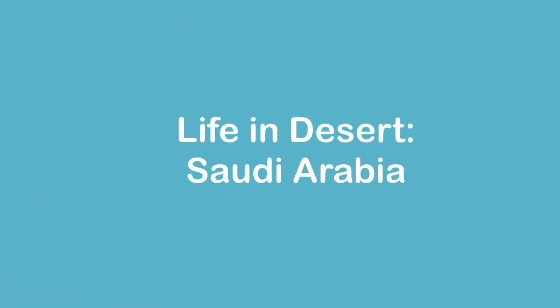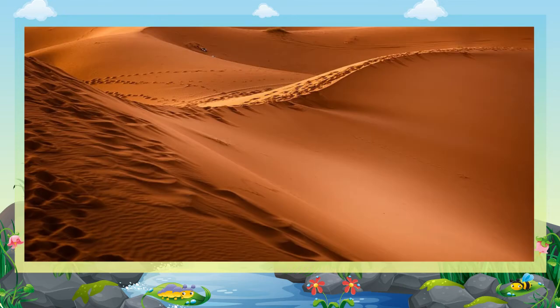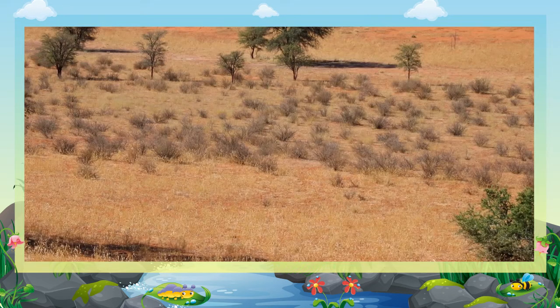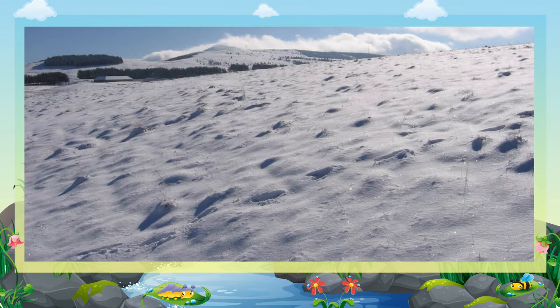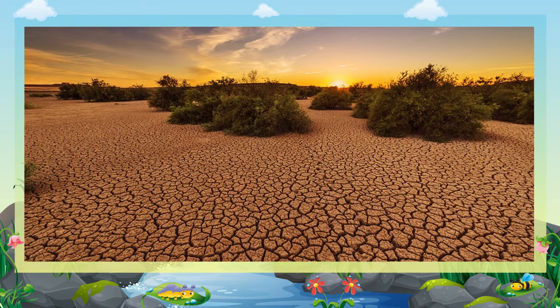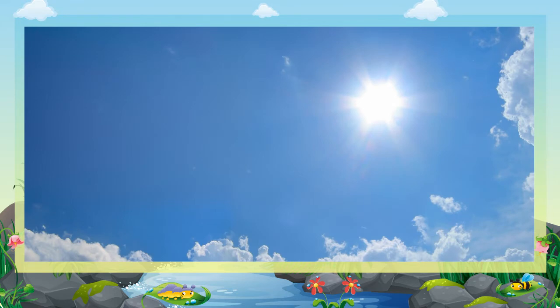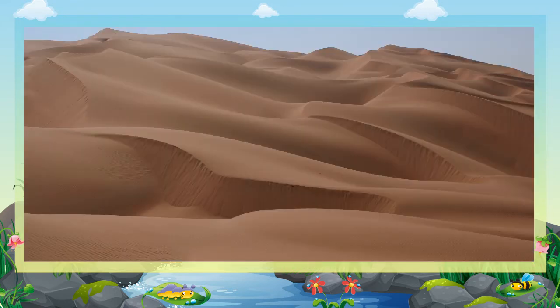Life in desert Saudi Arabia — introduction. A desert is an area covered with sand. It receives less rainfall, and due to the absence of rainfall, vegetation is also scarce. It is a dry, barren land. Deserts are of two types: hot deserts and cold deserts. Hot and dry climate is found in the desert; the sky is always clear and bright.